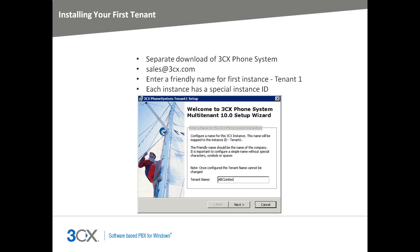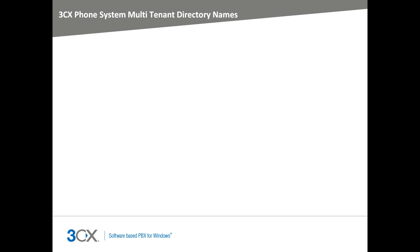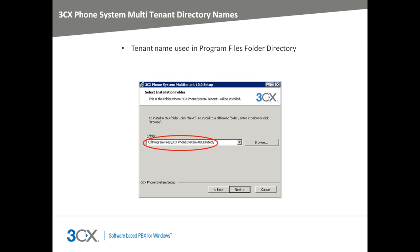It is recommended that you configure the friendly name to be the name of the company for which you are hosting. In this example, we are hosting a 3CX Phone System instance for a company named ABC Limited. This name is now the main identifier of this 3CX Phone System instance. The name of the tenant, ABC Limited, will be used in the Program Files folder directory. This makes multiple 3CX Phone System instances more organized as each installation directory can be easily identified from other tenants on the same machine.